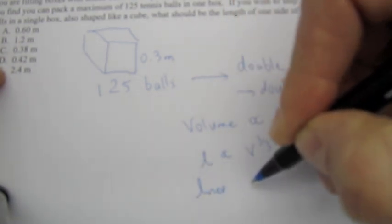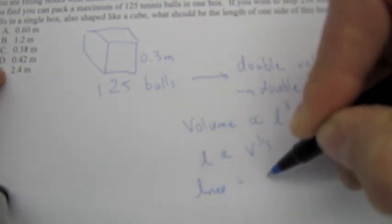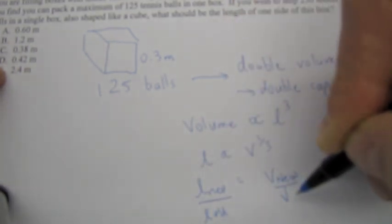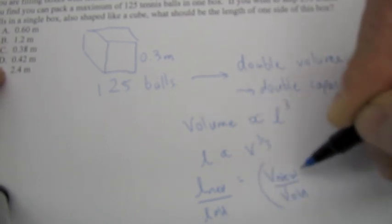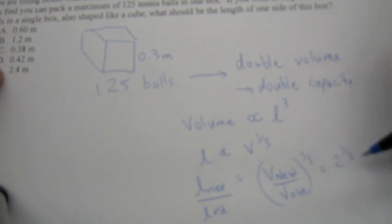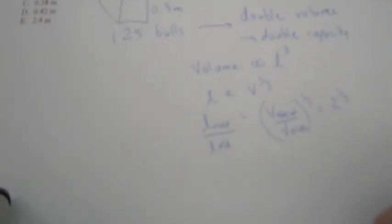Length new is equal to the volume new over volume old to the power one-third. So it's twice as much volume, so it's 2 to the power one-third. So the new length will be 0.3 meters times 2 to the power one-third, which equals 0.378.